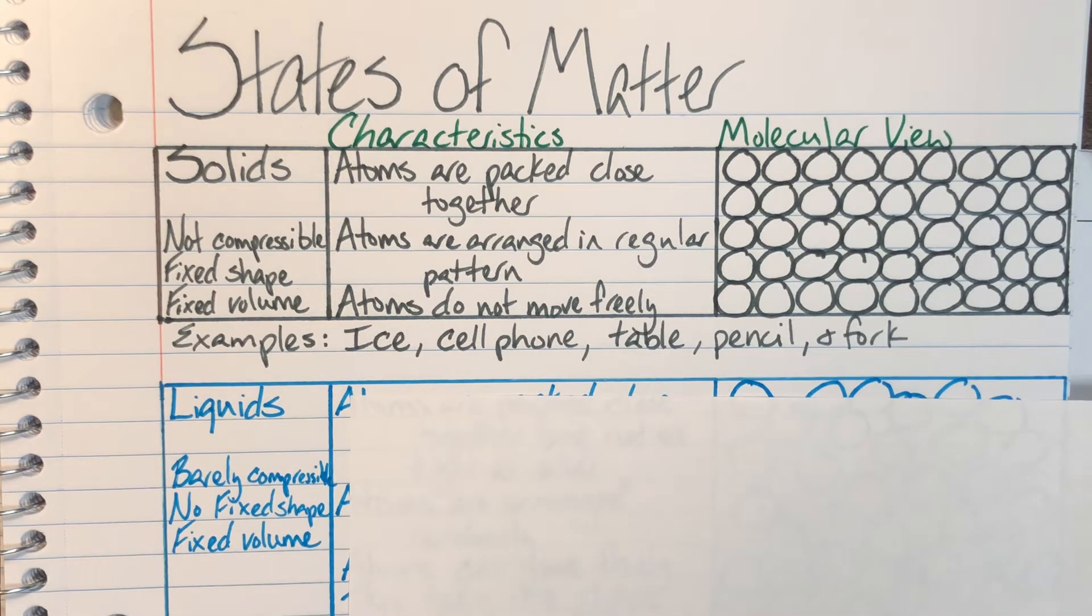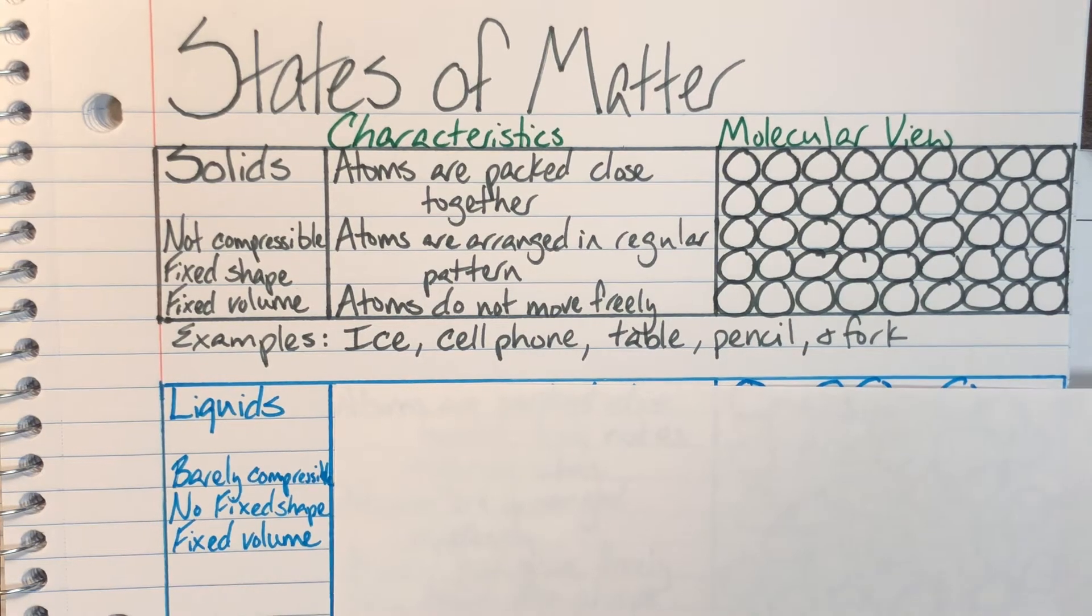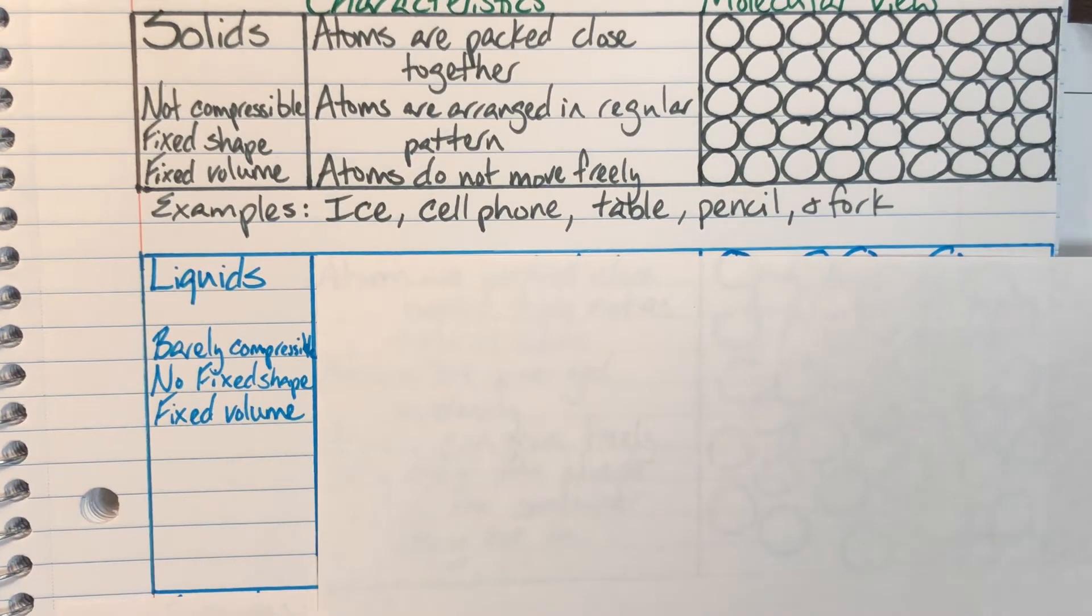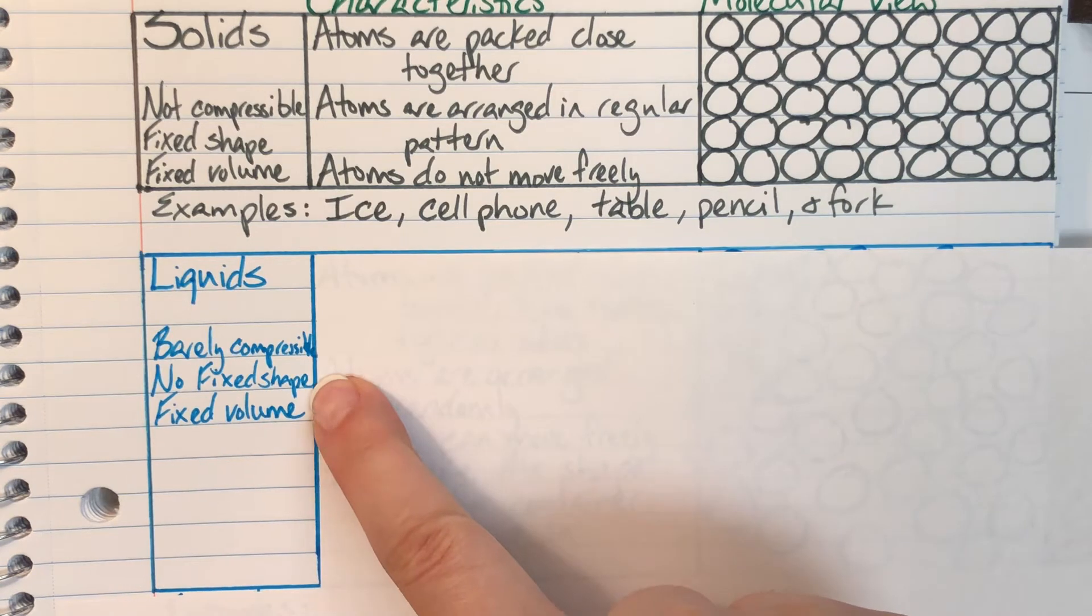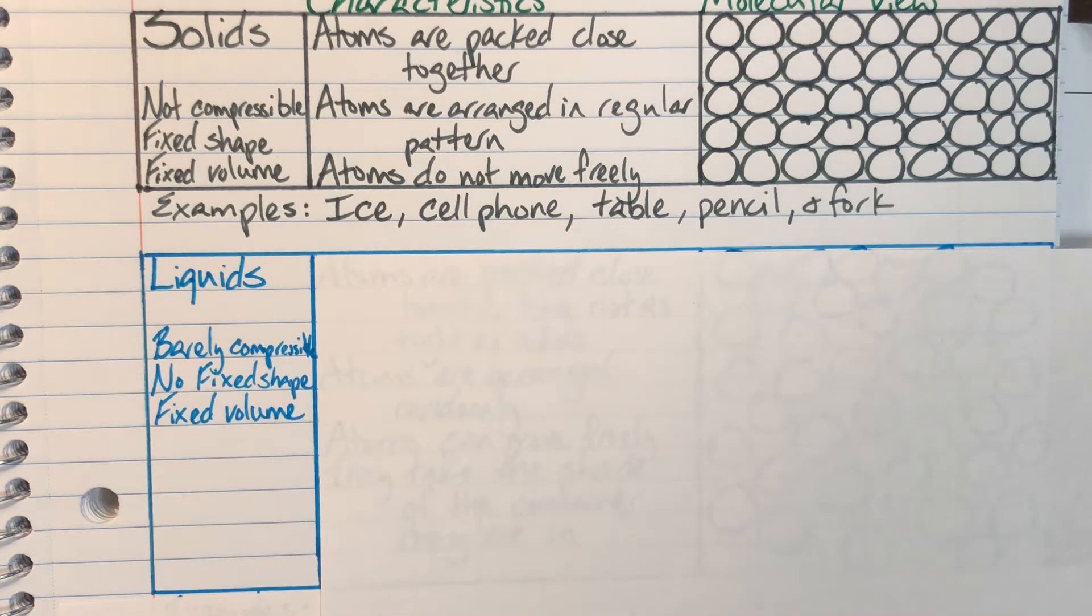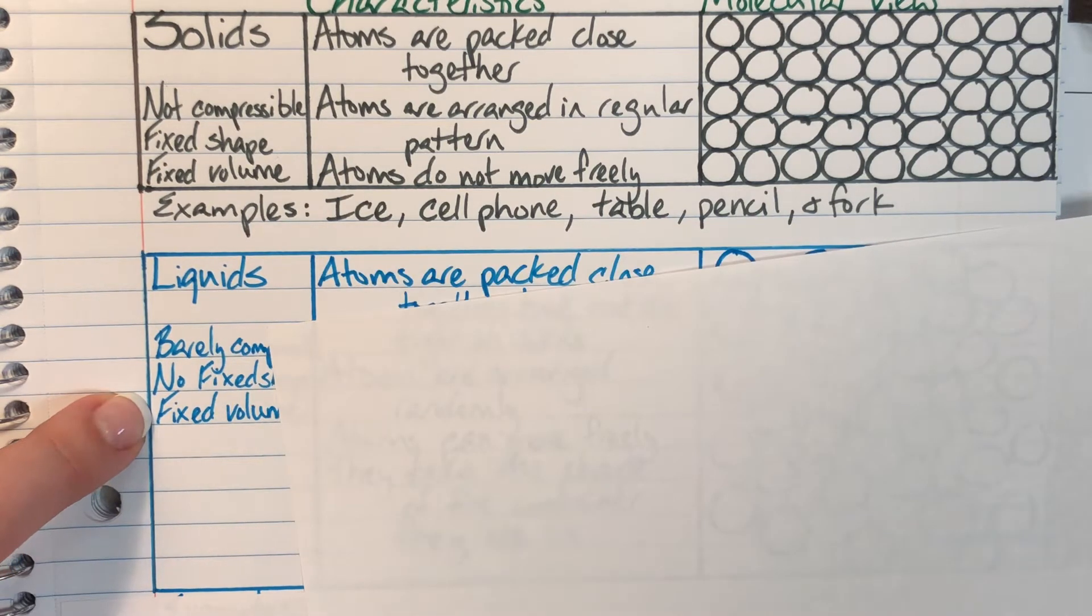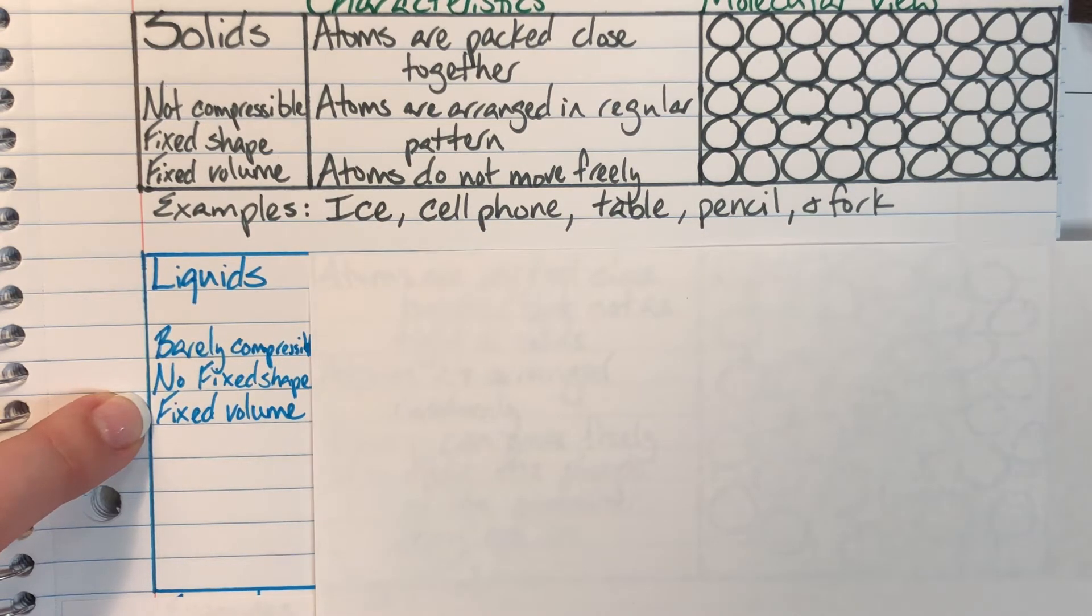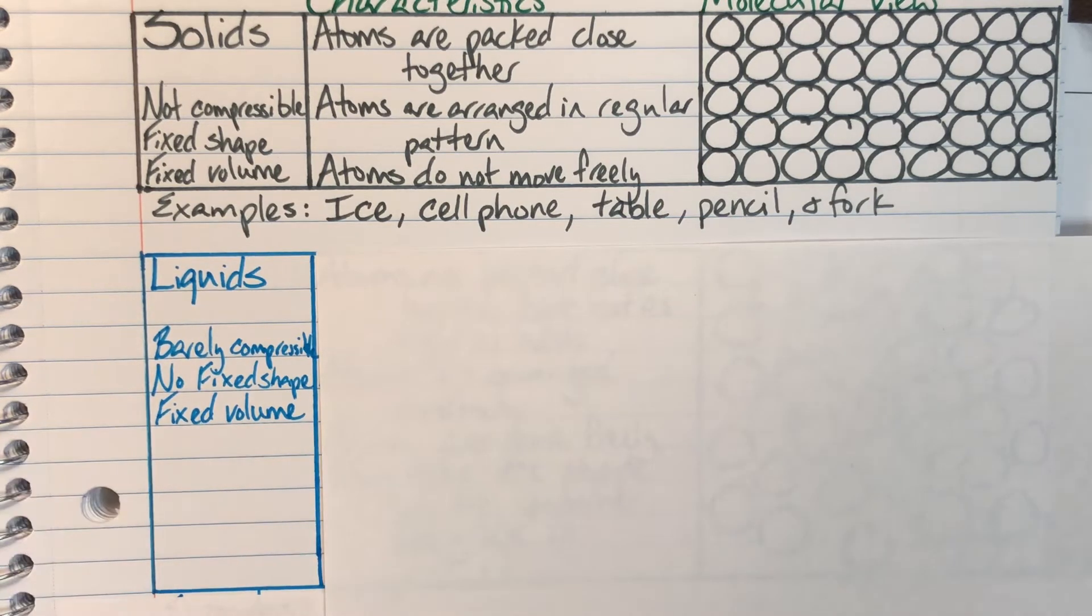Our next state of matter that we will be discussing are liquids. Liquids are going to be barely compressible, meaning I can ever so barely get them to squeeze together further but they're pretty tight already. They do not have a fixed shape. You should know this by living in the world. Liquids, you can pour them from your milk jug into a glass and it doesn't pour out in the shape of a milk jug. Instead it takes the shape of the glass but it doesn't grow or shrink because you put it in a different container. We have a fixed volume which is why measuring cups are useful but we do not have a fixed shape which is why we can pour them out of milk jugs into glasses.